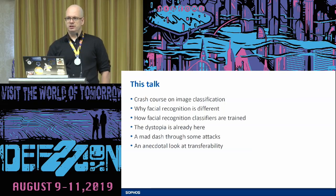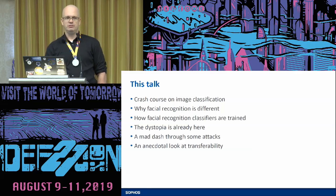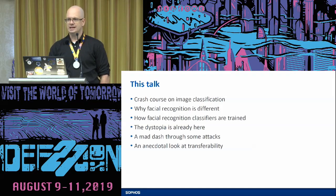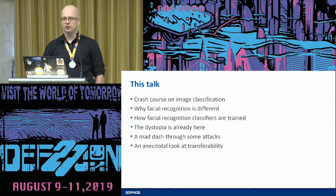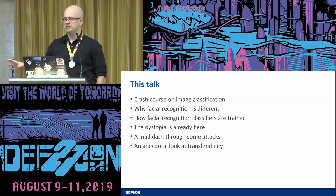Here's the outline for this talk. We're going to go on a crash course for image classification, talk about how the facial recognition problem differs from the standard image classification problem, and how that leads into differences in training and processing images. A brief note about how bad the situation really is for facial recognition and privacy. We'll do a sprint through some attacks you can launch against facial recognition systems, and then an anecdotal look at transferability — if you train an attack on one system and deploy it against another, what actually happens? Spoiler: the results are not great.